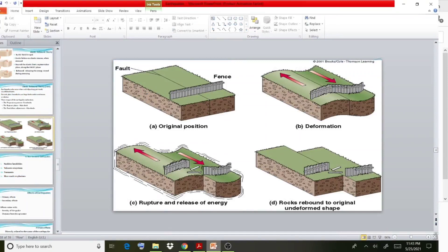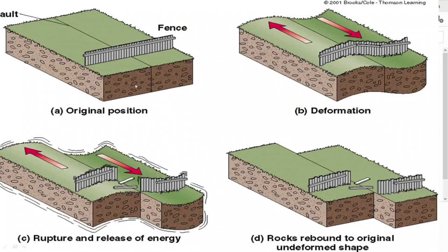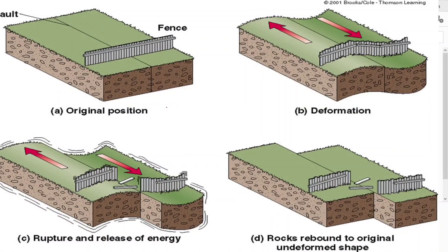Here you can very clearly observe what is happening. The first case is the original position: a fence is provided here and a fault plane is provided. The original position is a stable, stable position — that is the first stage.